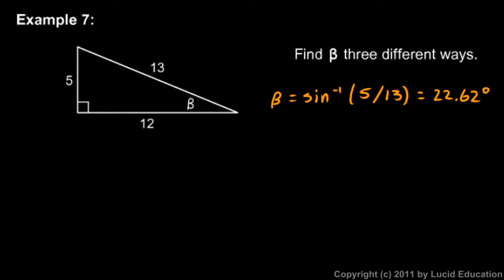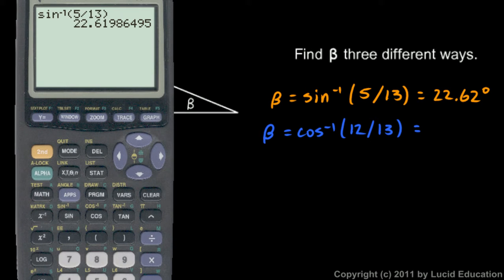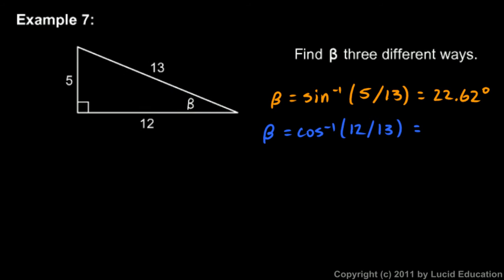That was the inverse sine function. We can also do this with the inverse cosine function. Here's angle beta — cosine is adjacent over hypotenuse, so the cosine of beta is 12 over 13. So beta will be the inverse cosine of 12 over 13. And that should give us the same number. Inverse cosine of 12 over 13 on the calculator gives exactly the same number: 22.62 degrees.